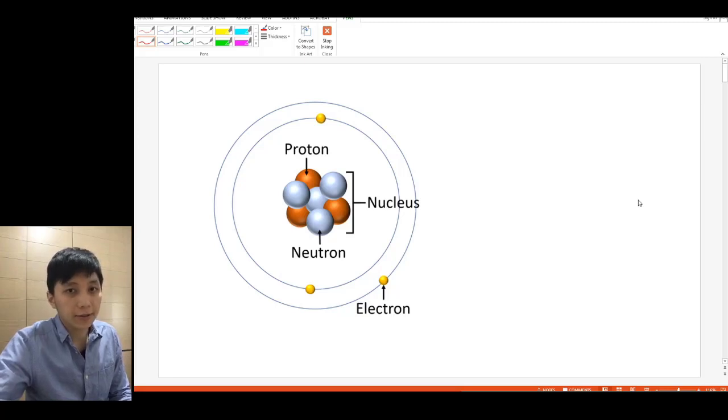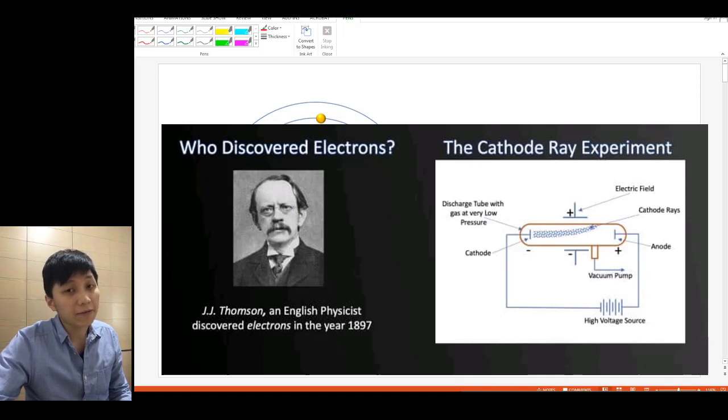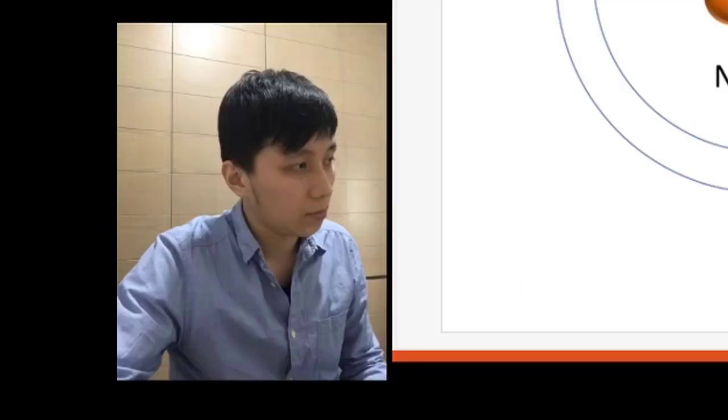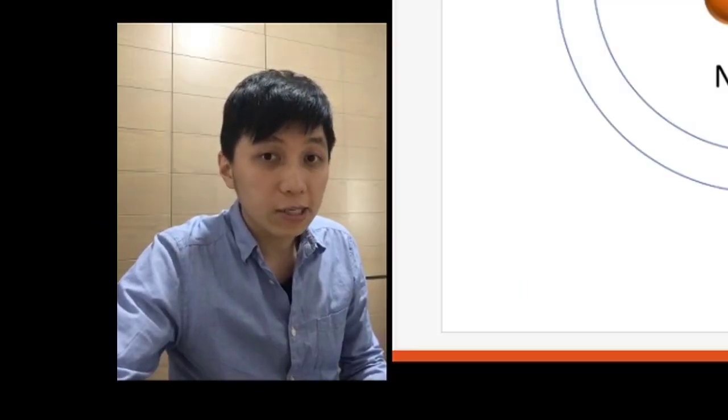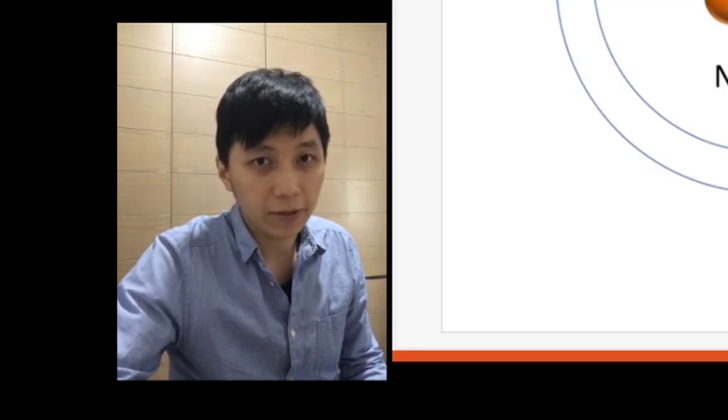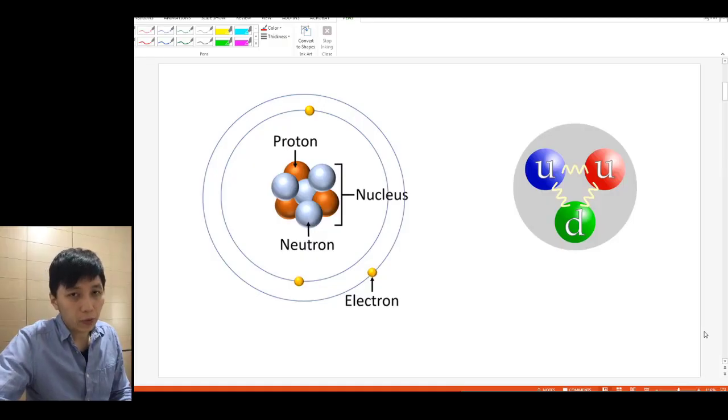When you are in junior science lessons, your teachers told you that the atom consists of three fundamental particles: electron, proton, and neutron. Let's take electron as an example. It has been discovered by physicist JJ Thomson more than 100 years ago. Do you think the scientists will be settled by this finding only? The answer is obviously no. We find something called quarks, which are the composition of protons and neutrons.